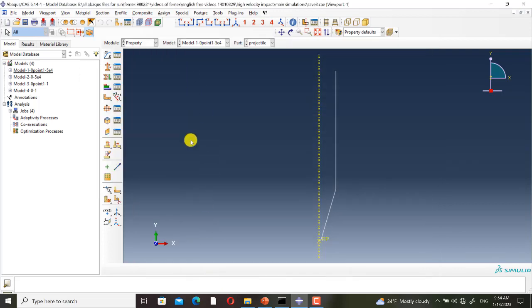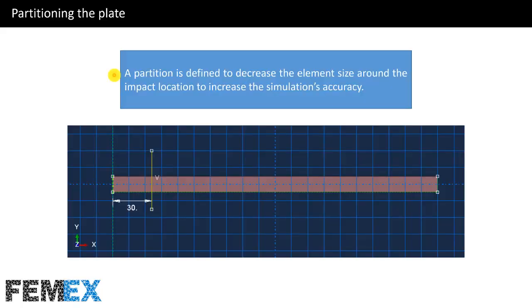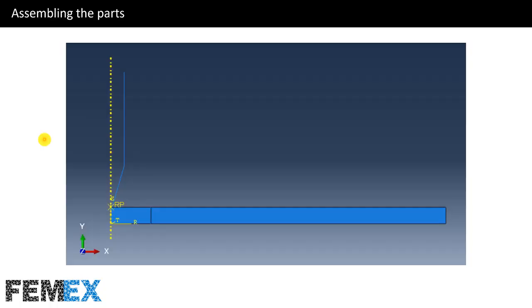In this simulation the unit of length is millimeter. Now I want to talk about partitioning the plate. A partition is defined to decrease the element size around the impact location to increase the simulation's accuracy. Here I have defined this partition with a distance of 30 millimeters, and here we have the assembly of the projectile and the plate.